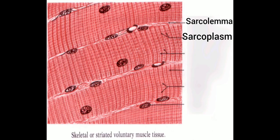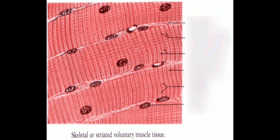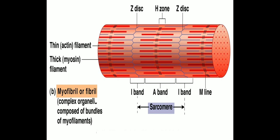The cell membrane — sarcolemma — surrounds the cytoplasm, which is called sarcoplasm. Sarcoplasm contains a large number of parallelly arranged myofibrils, and hence the nuclei get shifted towards the periphery — away from the center. Each myofibril is made up of a repeated functional unit called sarcomere.